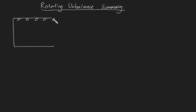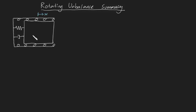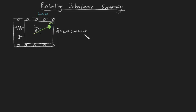Consider a spring-mass damper system constrained to move purely in the horizontal. Now imagine pinning a light rod to the block and placing a small mass, m, on the end. If the rod swings at a constant angular velocity, omega, and has a length e,